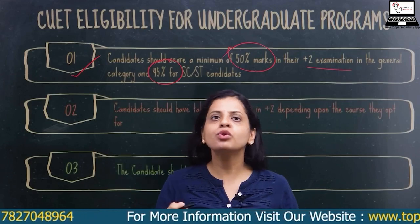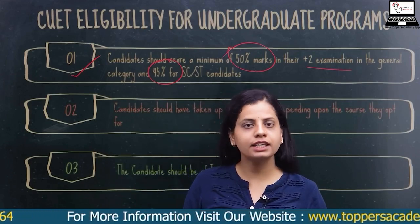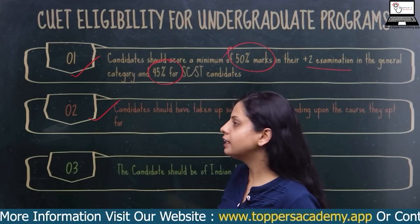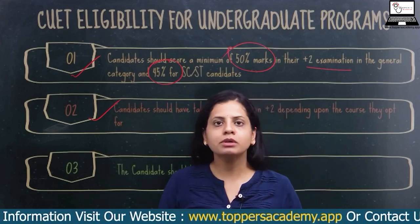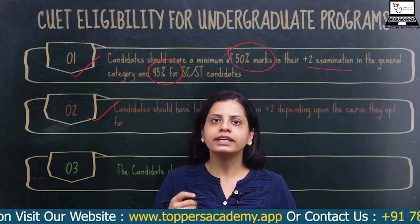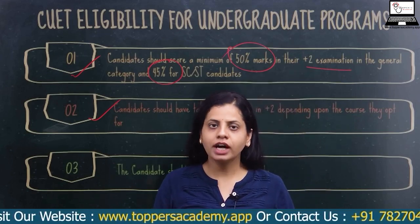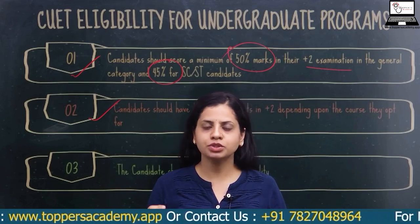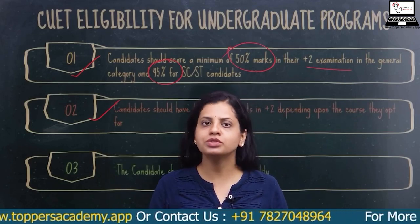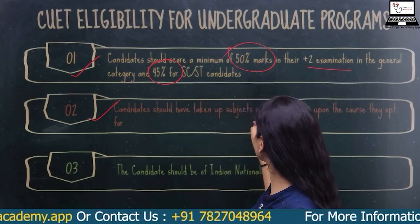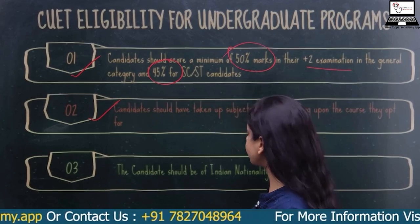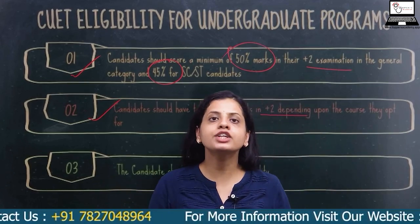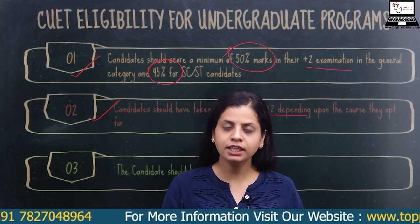The second eligibility criterion is that whatever subjects you want to pursue in your undergraduate or postgraduate programs, you should have studied those subjects in your plus two. The third criterion is that the candidate should be of Indian nationality.